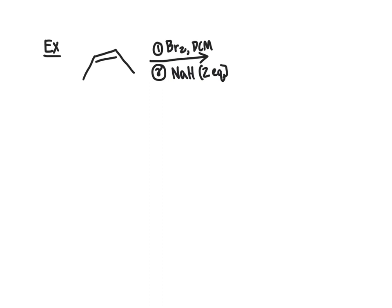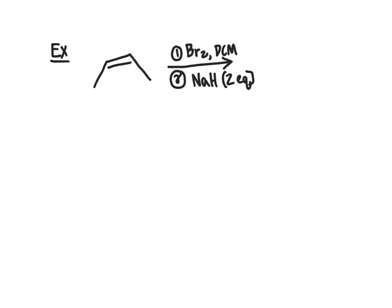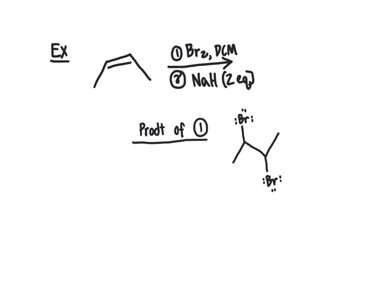Here's the second example problem: predict the final product and provide a mechanism. As a result of the first step — adding bromine across the carbon-carbon double bond — we get a bromine at carbon-2 and a bromine at carbon-3, our vicinal dibromide. The mechanism for this addition was covered in our chapter on addition reactions of alkenes.